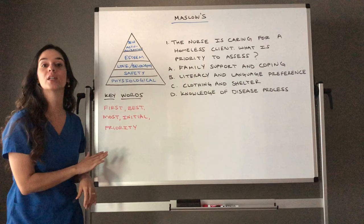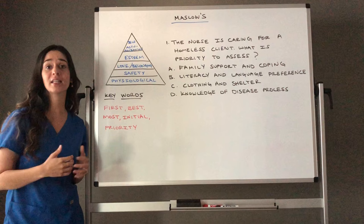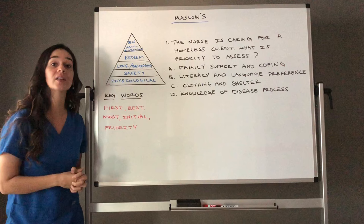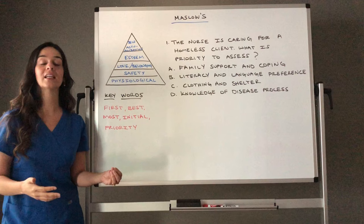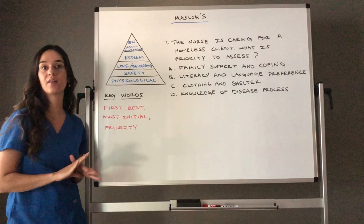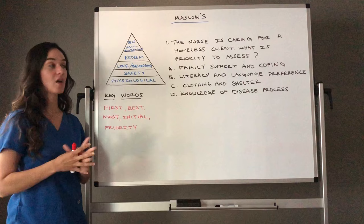When you see keywords in questions — 'best,' 'most,' 'initial,' 'priority' — think Maslow's first. You can have four great answer choices but you have to learn to get to the best one. I'm a proponent of question practice; the more questions you do, the better you get at breaking them down systematically. You need a systematic way of breaking down questions and always keep Maslow's at the forefront.